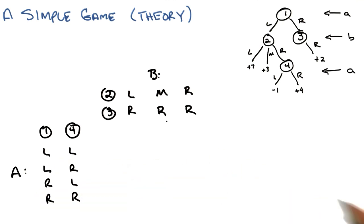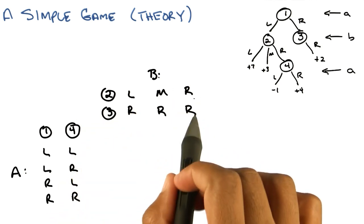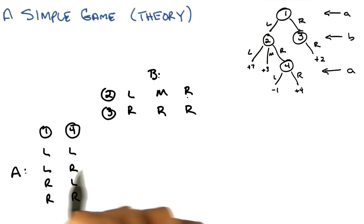now why did I write it this way, Michael? Well, I wrote it this way because, if I write it this way with all the choices, all the strategies that B has up here, and all the strategies that A have here, I actually form a matrix.